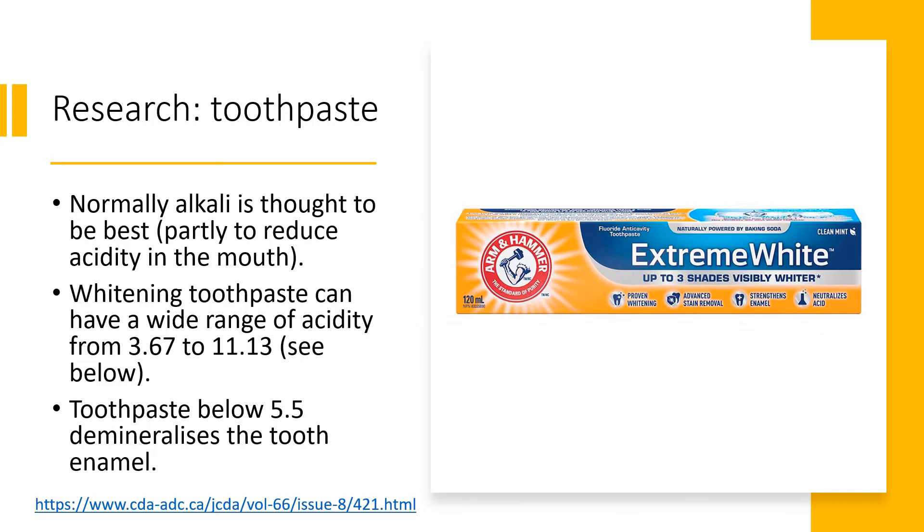Well, toothpaste is one of the really confusing ones here, because when we first put the universal indicator in, it went an alkali color and then it went an acidic color, which was quite confusing. But remember, toothpaste is a mixture of different substances. Now, we normally think of an alkali as best to reduce the acidity of the liquid in the mouth, which bacteria can produce acids. In fact, whitening toothpaste can have a large range of pH levels, so it could be as low as 3.67 or as high as 11.13 according to the study in the link below. That is very acidic and very alkali, which is very strange.